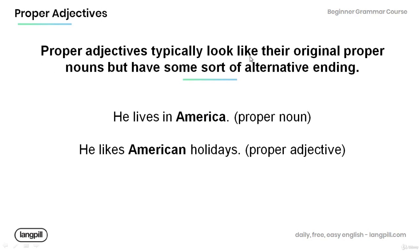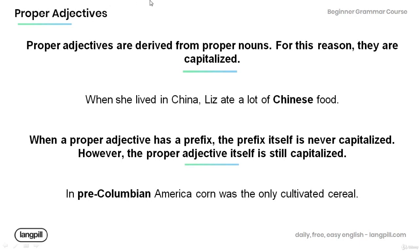Also note that proper adjectives typically look like their original proper nouns but have some sort of alternative ending. For example, 'America' is a proper noun — the name of the country. In the sentence 'He likes American holidays,' 'American' is a proper adjective formed from the proper noun 'America,' with only the ending being different.